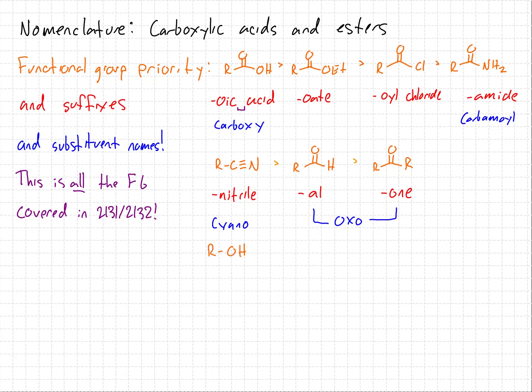Finally, at the bottom of the list, we have alcohols and amines. Amines have the lowest priority of all functional groups we'll discuss in this class. Alcohols are covered in Chem 2131. Amines are given the suffix 'amine' and are named as amino groups when used as substituents.